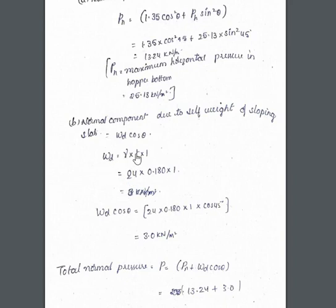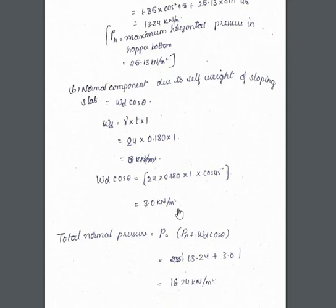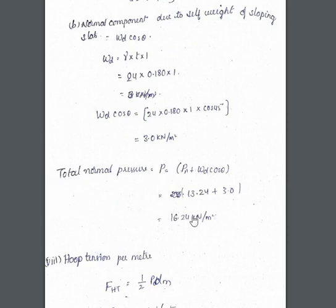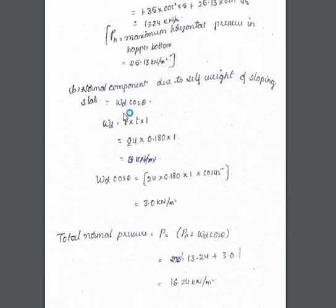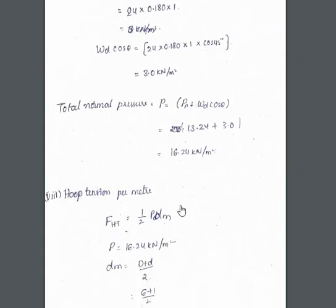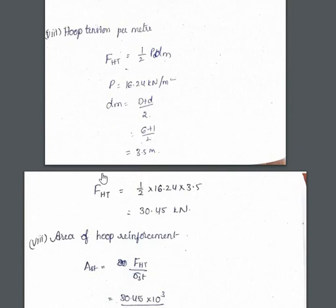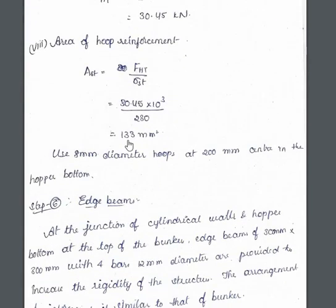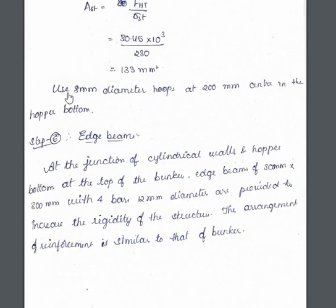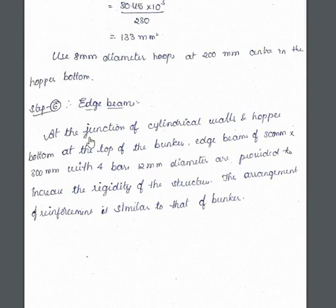Normal component due to self-weight of sloping slab: gamma × t × 1, with thickness assumed as 180 mm. Then wd × cos theta = 3 kilonewton per meter square. Total normal pressure pn = 16.24 kilonewton per meter square. Hoop tension per meter: T = 0.5 × p × dm, giving 30.45 kilonewtons. Area of hoop reinforcement = T / sigma_st = 133 mm² per meter. Provide 8 mm diameter hoops at 200 mm center to center in the hopper bottom.